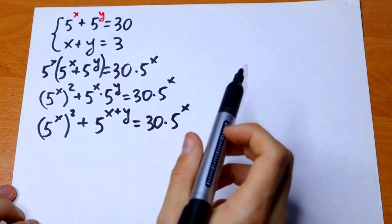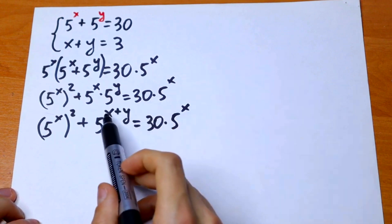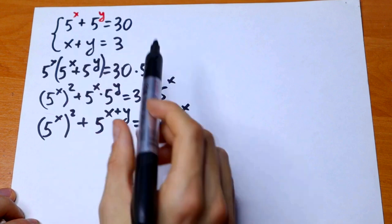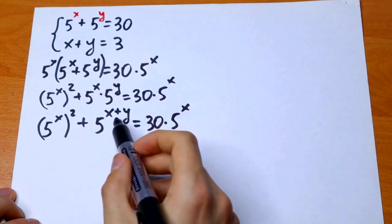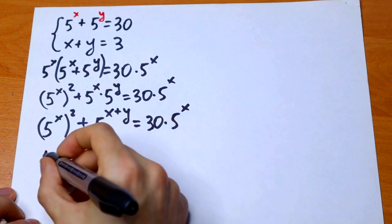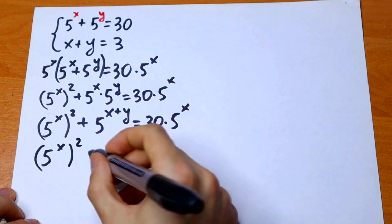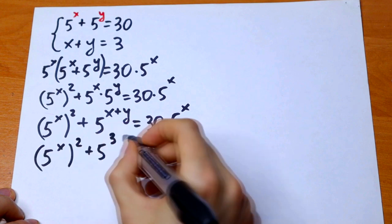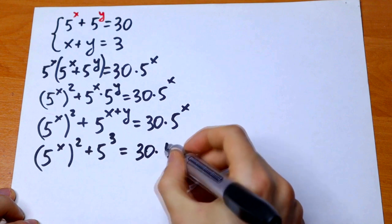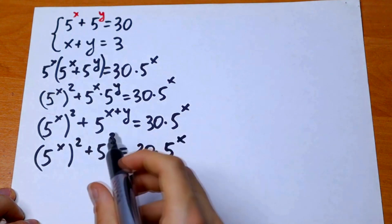We know that x plus y equals 3, so we substitute 3 in place of x plus y. This gives us 5 to the power x squared plus 5 cubed equals 30 times 5 to the power x.